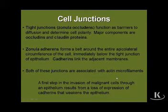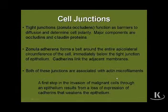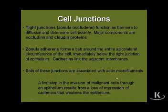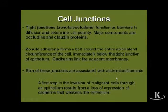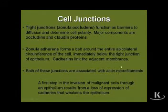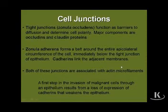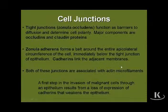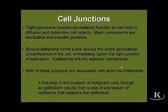A zonula occludens functions as a barrier to the extracellular space and helps determine cell polarity. The major components of that barrier are occludin and claudin proteins. The zonula adherens lies directly below the zonula occludens and helps maintain its integrity and proximity. This is where we find cadherins linking the adjacent membranes, and both of these junctional specializations are associated with actin microfilaments. Cadherins have tremendous pathological significance because a first step in the invasion of malignant cells through an epithelium results from a loss of expression of those cadherins, weakening the epithelium.